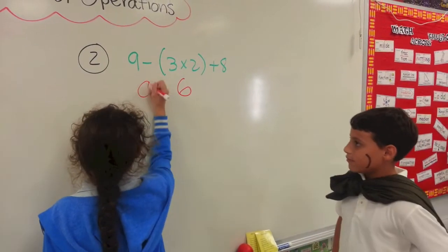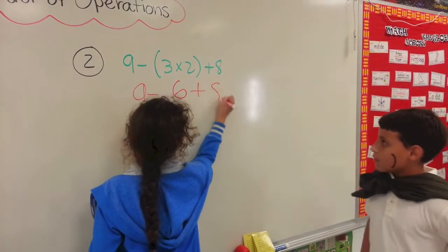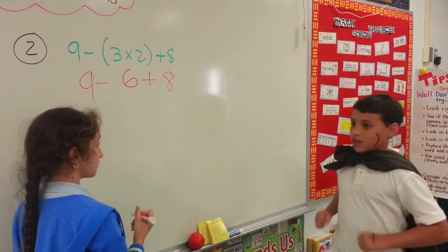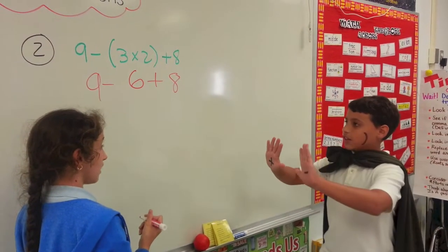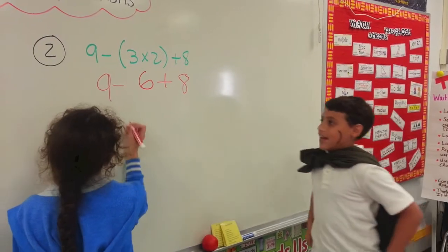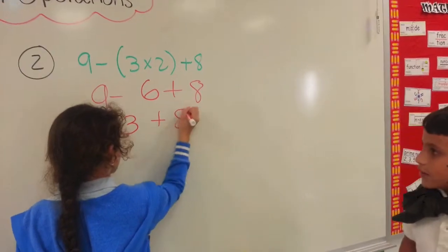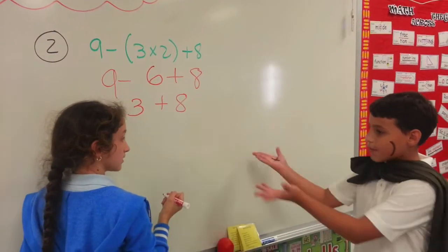Now, rewrite what's left. Okay. Now, is there any multiplication or division? No. Then you use addition and subtraction in the order that it's in. Nine minus six equals three, plus eight. Since that's the only one left, solve it.